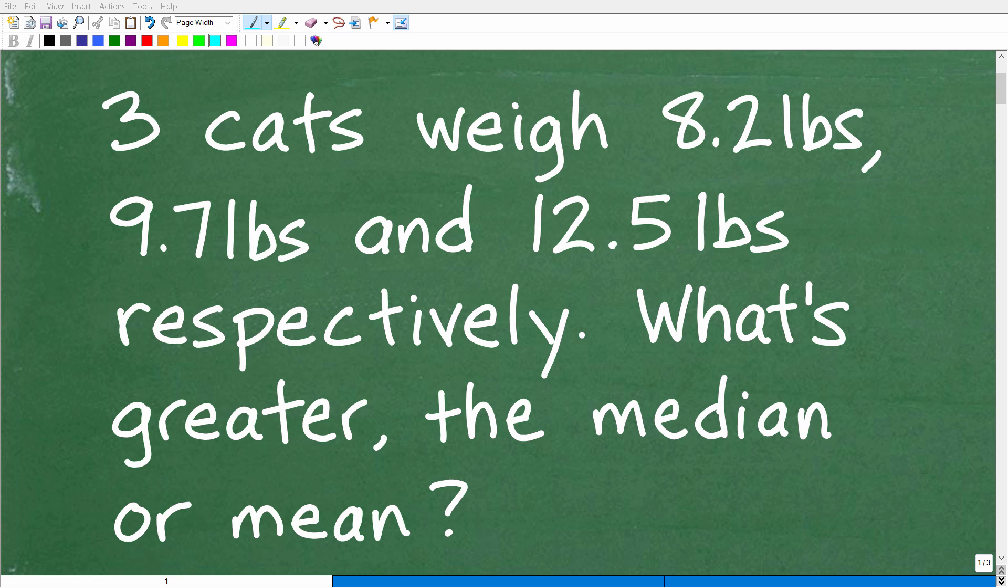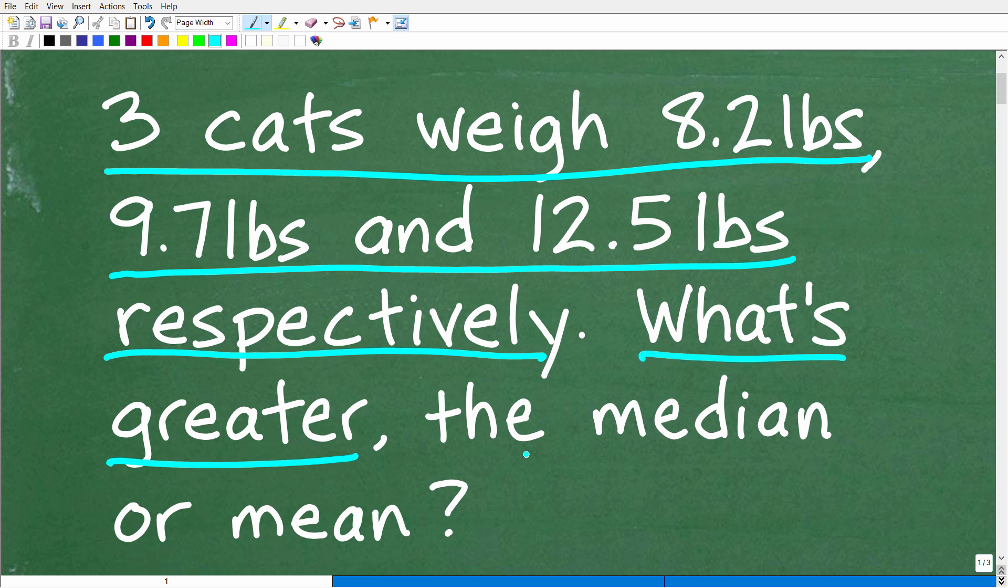Okay, so get ready to put your math skills to work to solve this interesting little math word problem. Matter of fact, let me go ahead and read the problem. It is as follows: Three cats weigh 8.2 pounds, 9.7 pounds, and 12.5 pounds, respectively. What's greater, the median or the mean, when it comes to the weight of these cats?